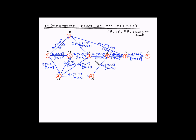In those calculations we were not looking at the preceding activity for activity F, and we were assuming that all other activities are happening at the earliest start and finish times. Now, C is the preceding activity for activity F and K is the following activity. So if we have to find out the delay possible in activity F without affecting either the preceding or the following activity, that delay is known as the independent float, or IDF.